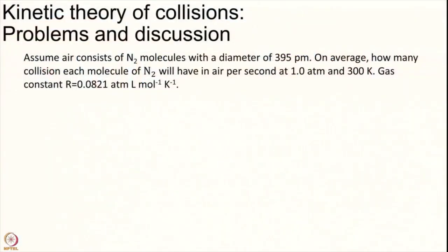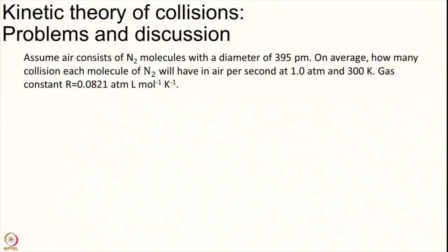Our first problem assumes air has only nitrogen gas. Nitrogen has a diameter of 395 picometers. The question is how many collisions each molecule of N2 will have per second at 1 atmosphere and 300 Kelvin. The answer is very much related to collision theory. In collision theory we find a rate constant as the rate of collisions, which is directly related to the number of collisions.